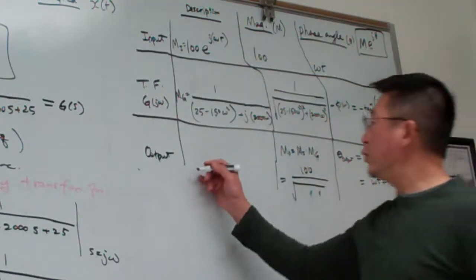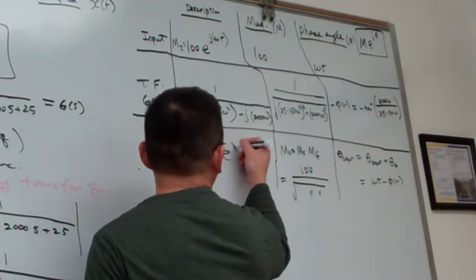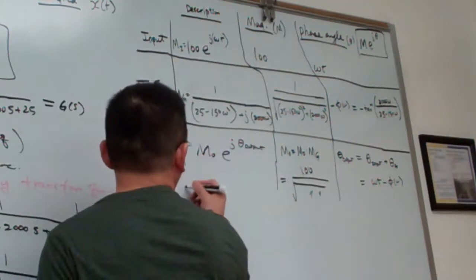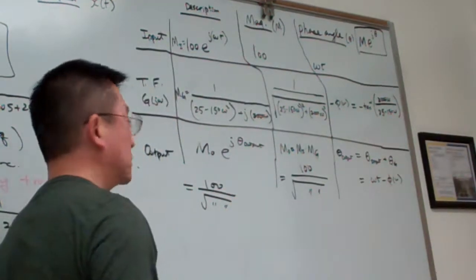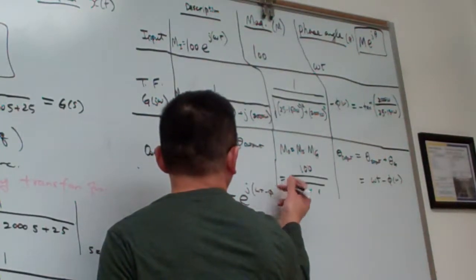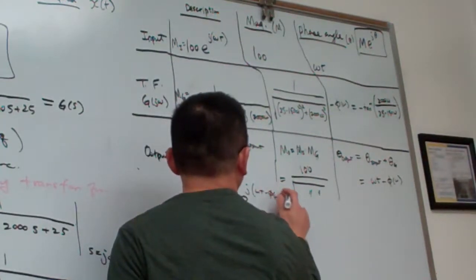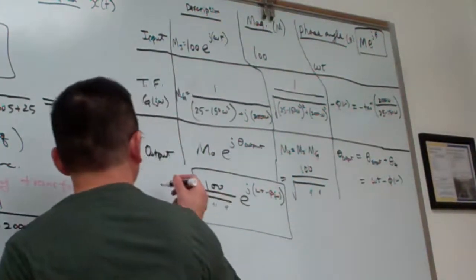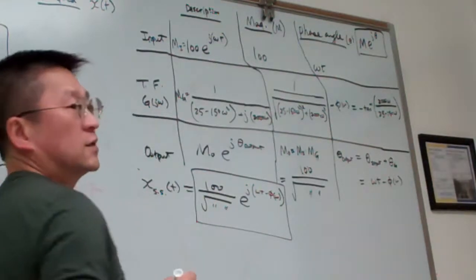So right now we have the output. The output has the magnitude, mo, and output has the phase angle. So we simply put it into here. So in this way, the output equal to 100, and again, you copy that information from the square root and times e j omega t minus phi omega. So this is our steady state response. That is our result.